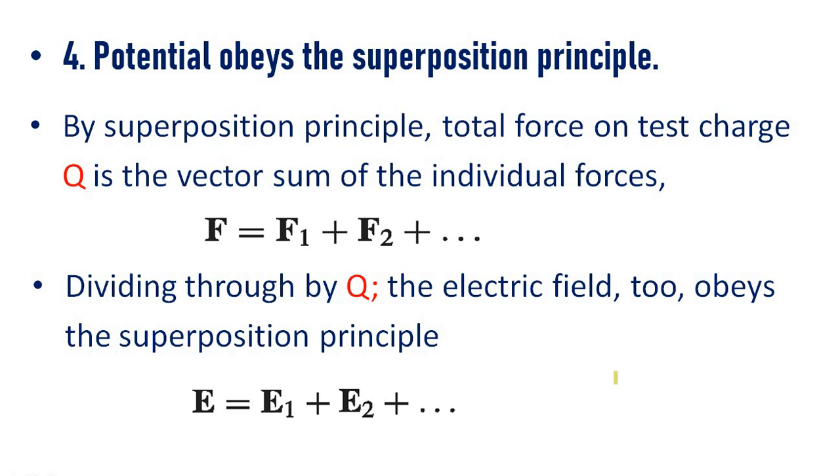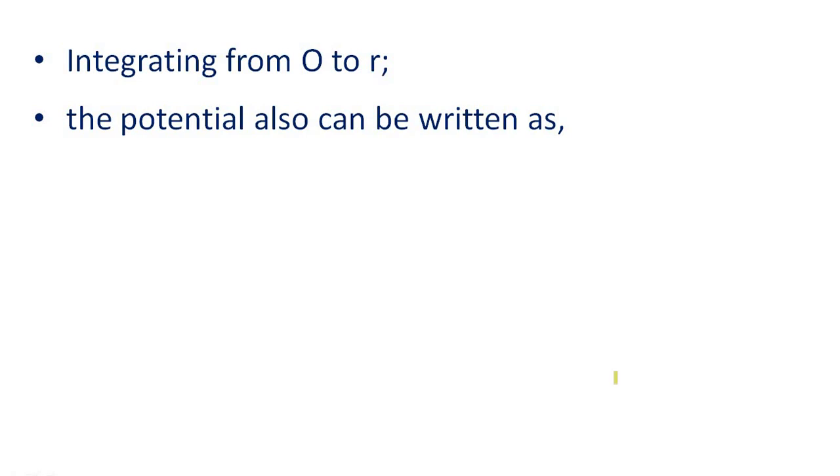Now, from E, we can reach to V by an integration. V equal to minus integral O to r E dot dl. Integrating from O to r, the potential also can be written as V equal to V1 plus V2 plus etc.